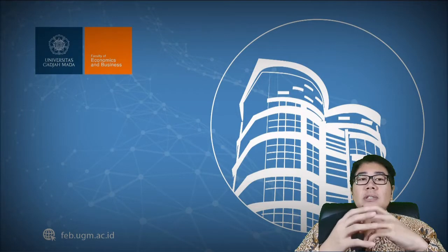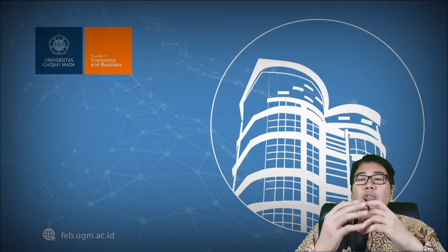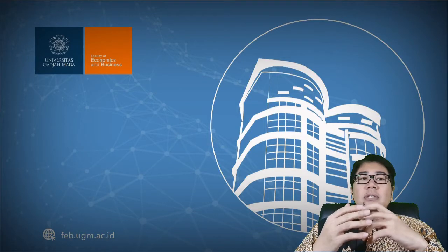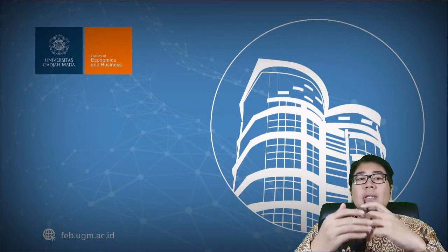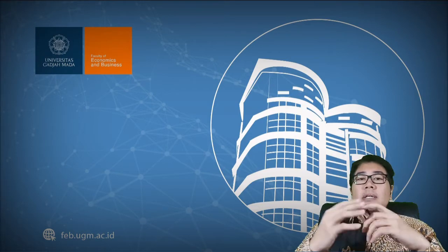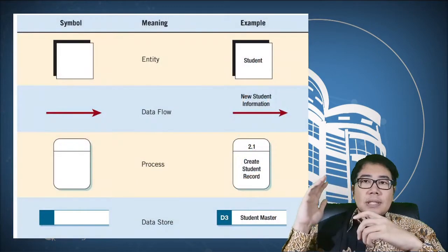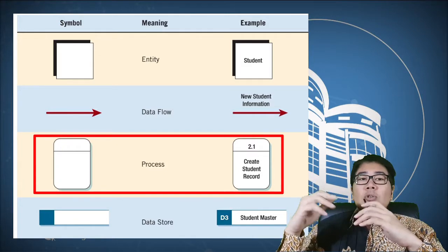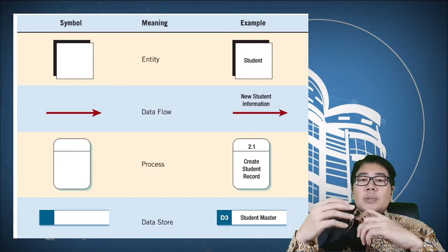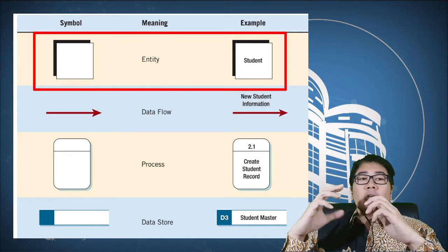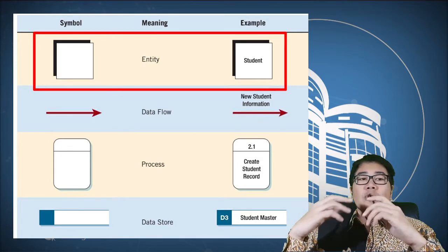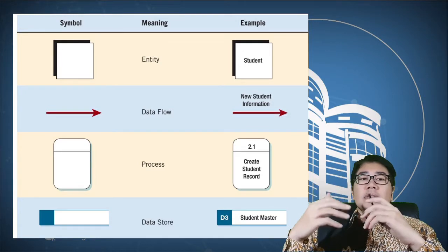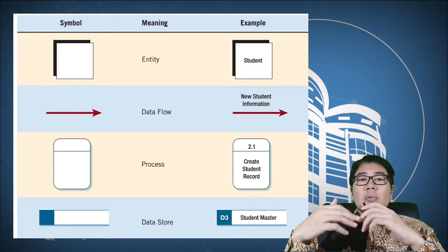A data flow diagram is a data flow notation in business transactions, including business processes or information systems, entities and data stores as the data sources and data recipients, and the data flow. The data flow diagram model can be described by the following symbols. The first one is a blank box or circle to describe an information system or process. The second one is a box diagram describing the external entity of the information system as a source of data as well as the receiver of data.